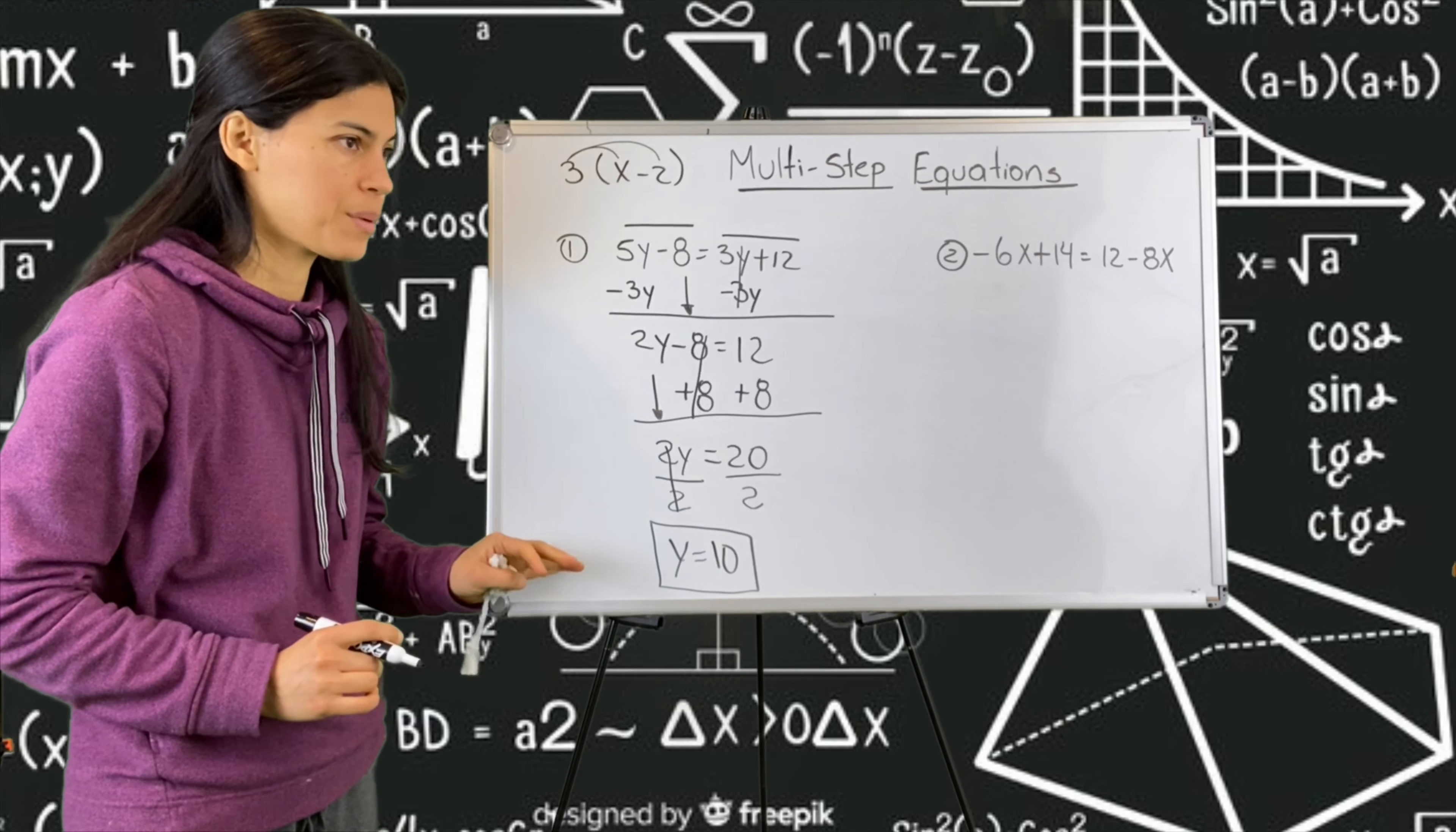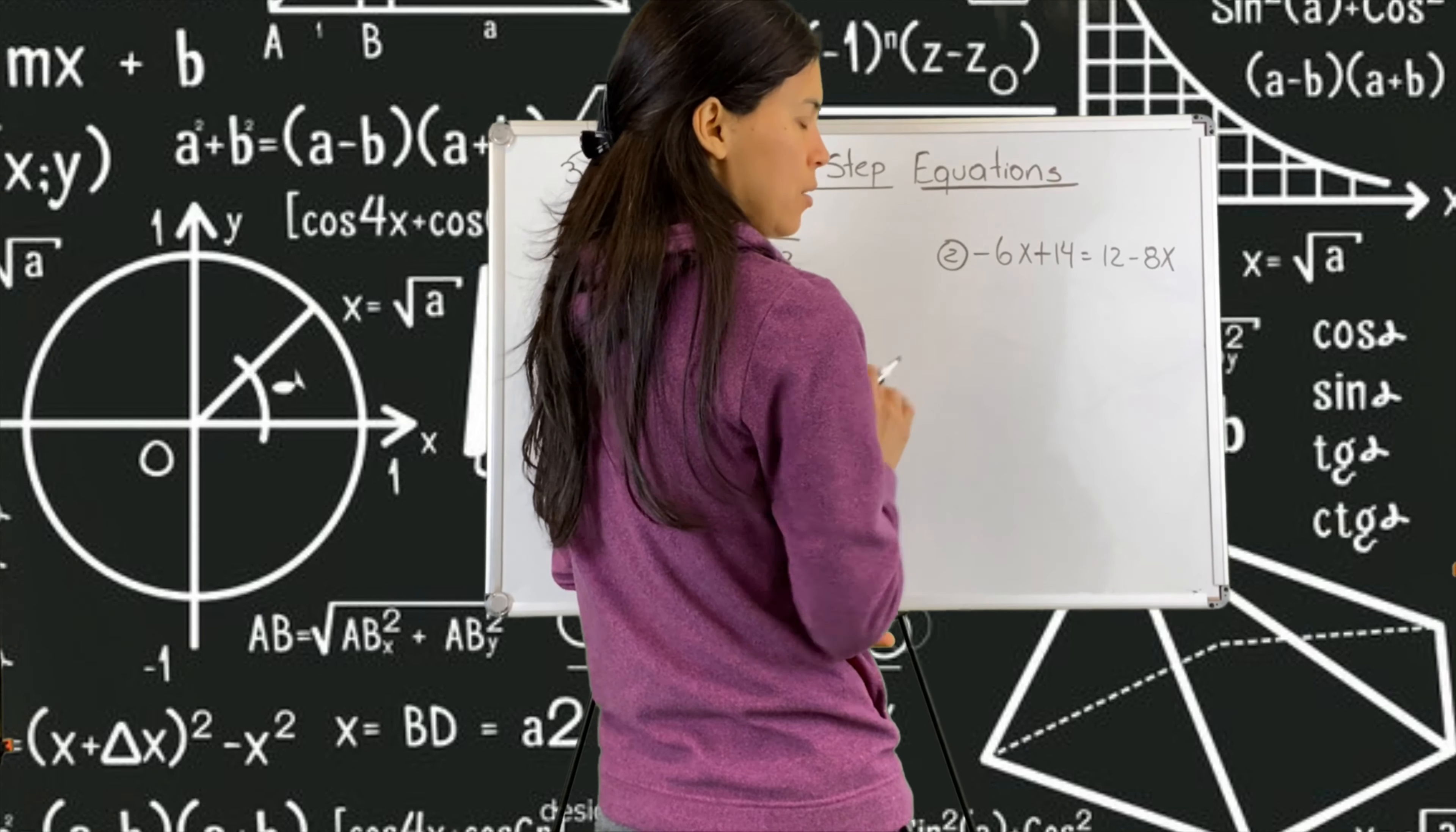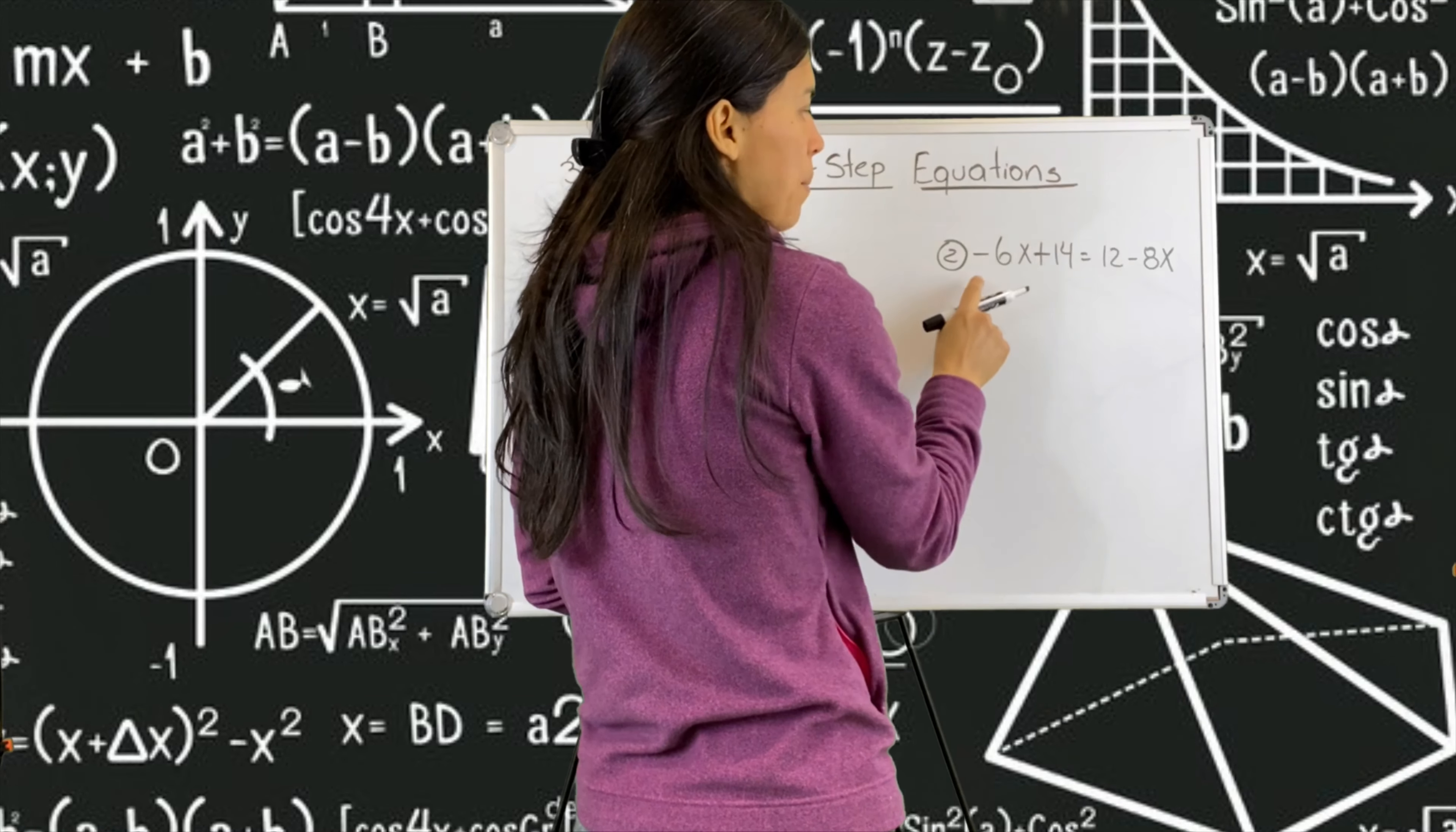Pause any time that you need so you can copy. Okay, let's do number two now. Number two, distribute. There is no distribution. Remember, distribution is right over here. There is no distribution here. Combine like terms.